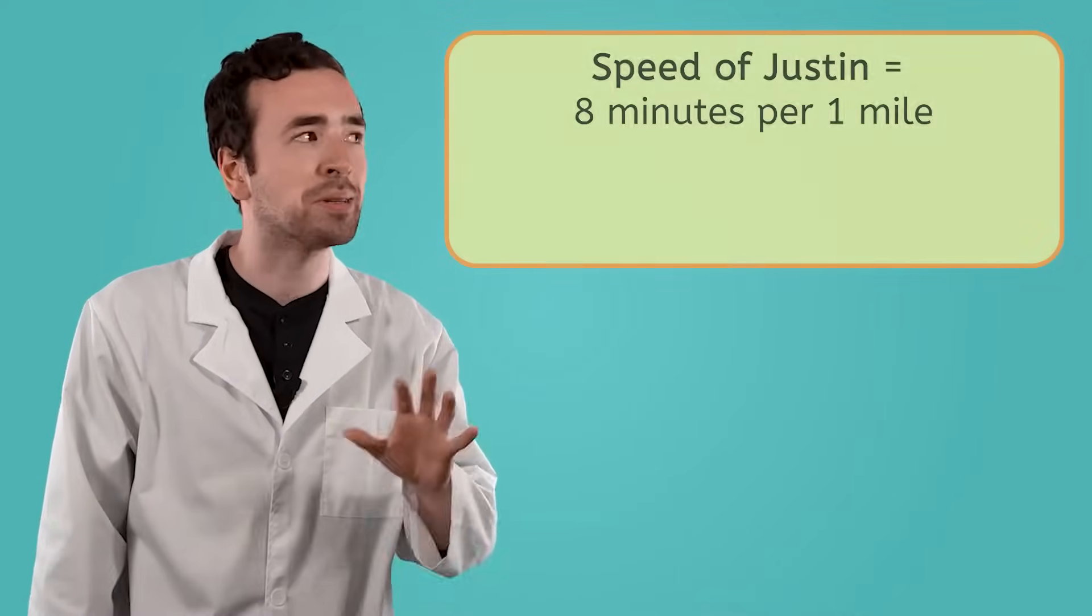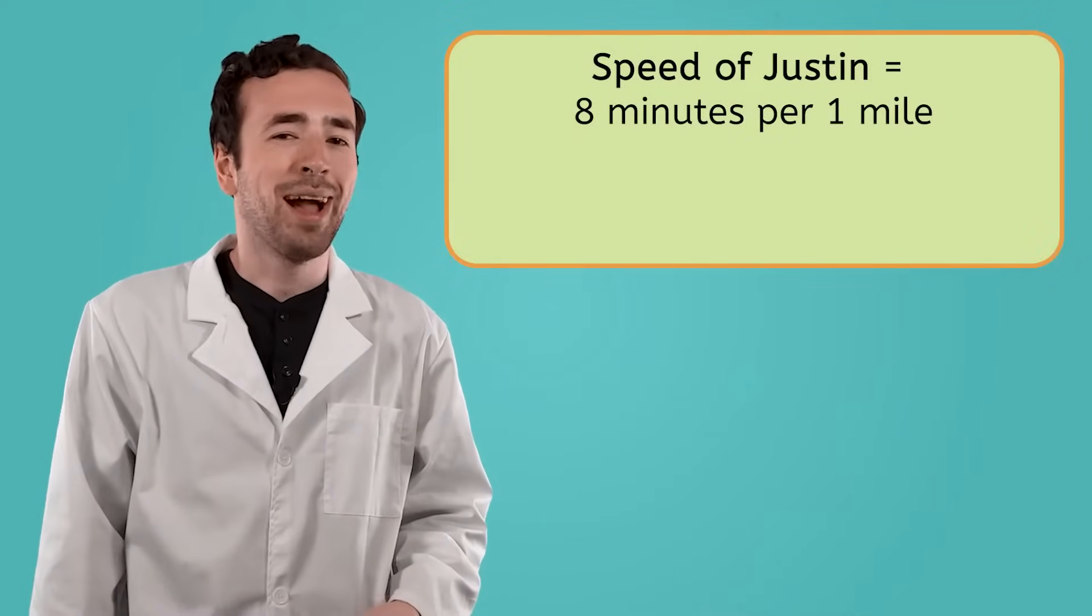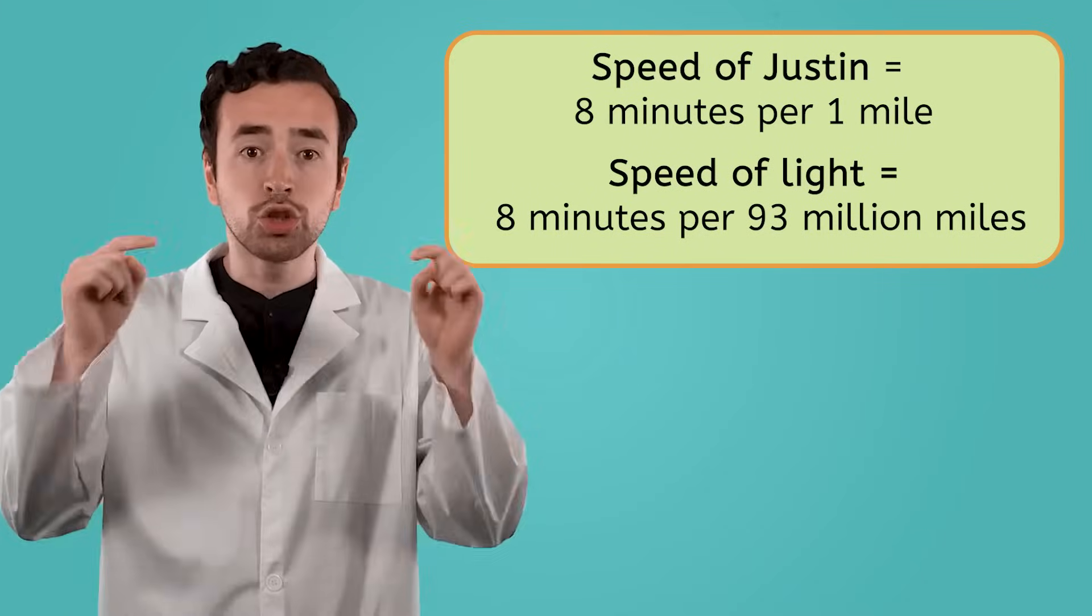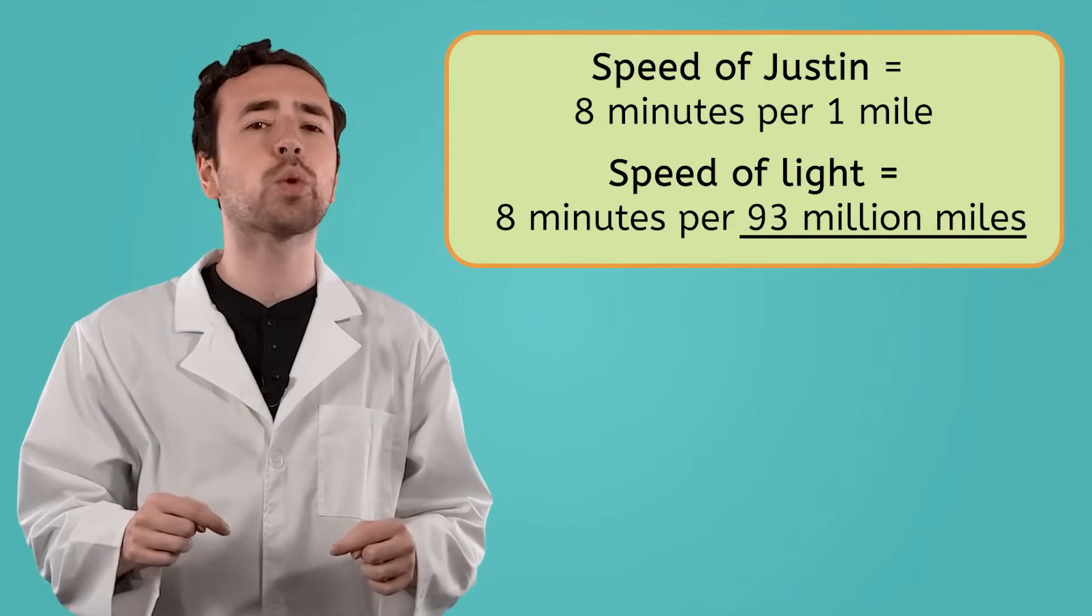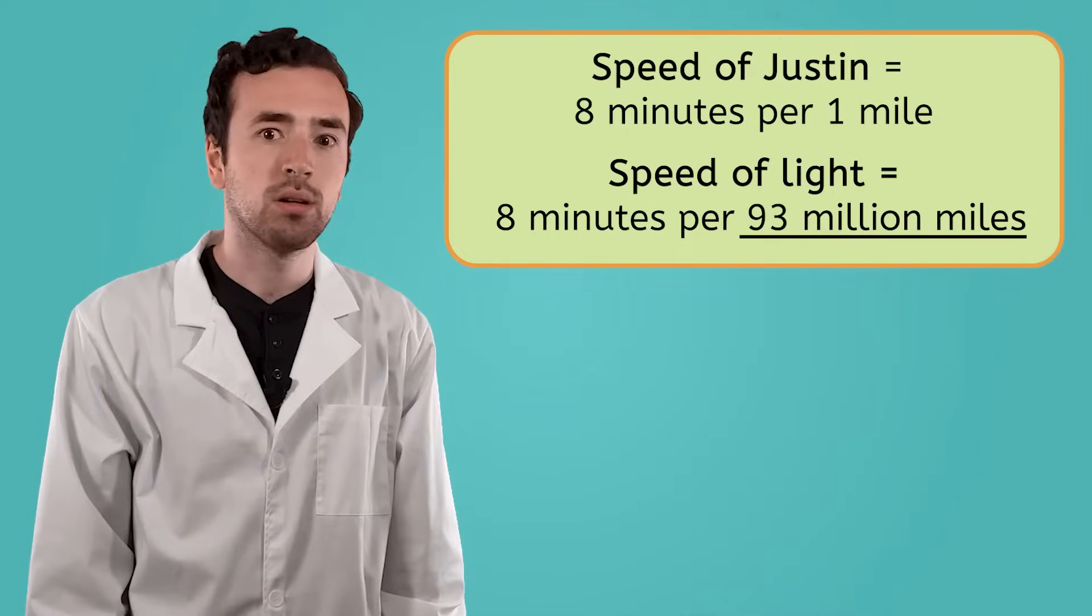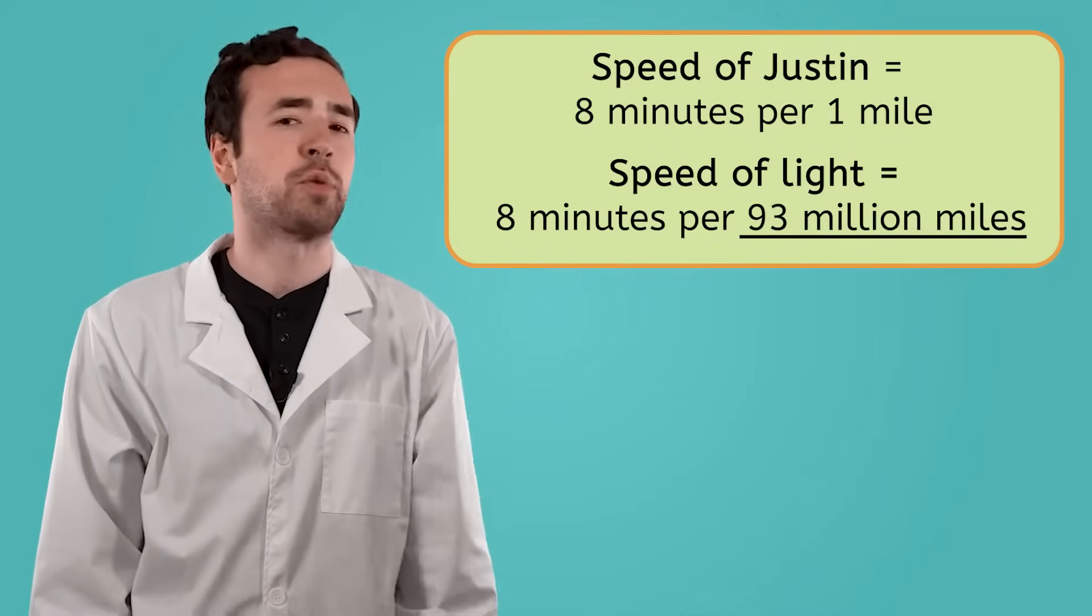But how does the sun's light get all the way from the sun to Earth? Well, light is super fast. The speed of light is actually the fastest known speed anything in our universe can travel. Now, I don't want to brag, but I myself am pretty fast. I can run one whole mile in just about eight minutes. But in those same eight minutes, light can travel all the way from the sun to the Earth, which is more than 93 million miles. Yeah, I don't think I'm going to be beating light in a foot race anytime soon.